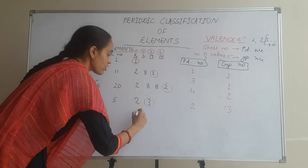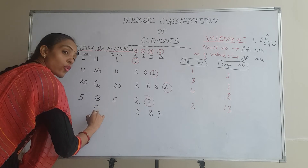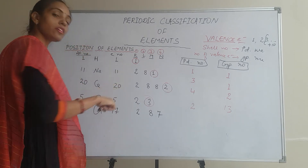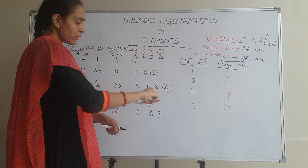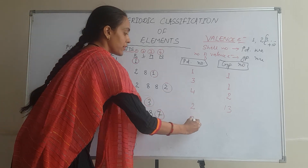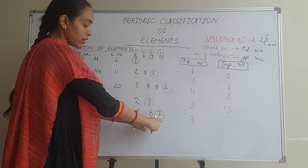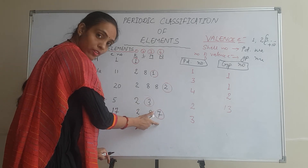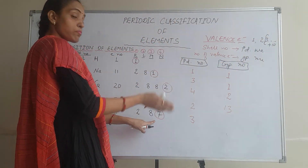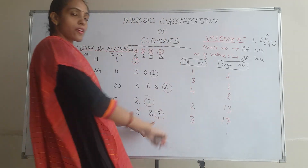Similarly, if I take the configuration 2, 8, 7, which is Chlorine — the 17th element with 17 electrons. The valence electron is in the third shell, so it belongs to the third period. For the group number: 7 valence electrons, which exceeds 2, so we add plus 10. That means the group number will be 17th.